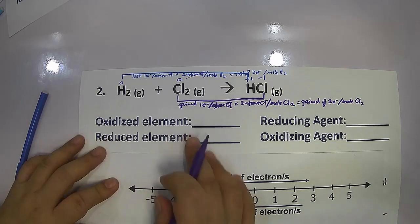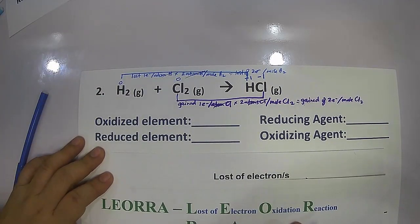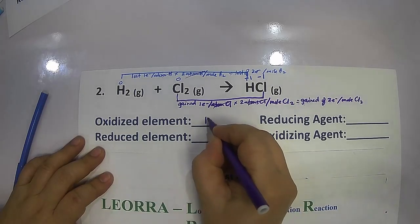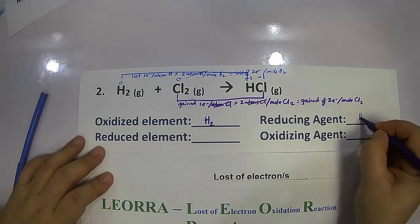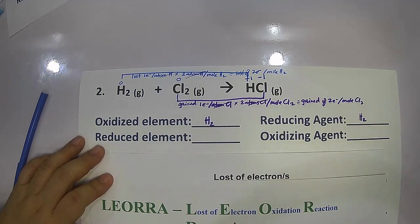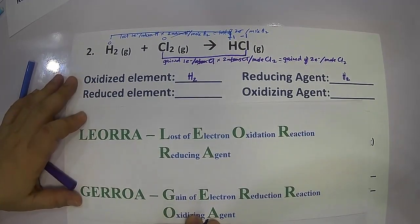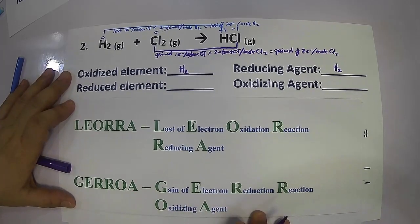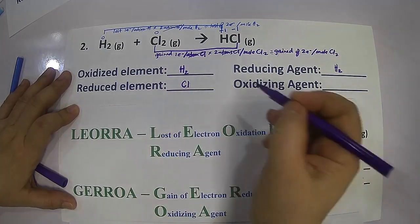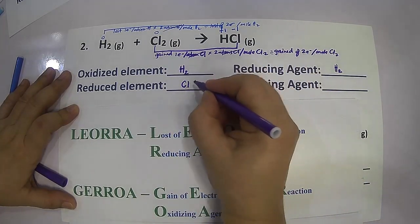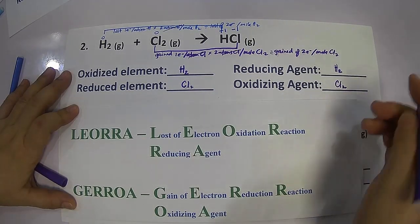The one that undergoes oxidation is the one that lost electron. It is the hydrogen that lost electron, and therefore hydrogen gas is the reducing agent. The one that undergoes reduction is the one that gained electron — in this case it is the chlorine atom. Therefore, the oxidizing agent is the chlorine gas.